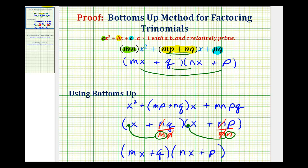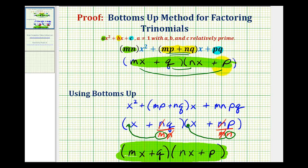And this is the bottoms-up method for factoring a trinomial when a is not equal to one — changing it to a trinomial when a is equal to one, dividing the constant terms of the binomial factors by the original value of a, simplifying, and moving the denominators up to the coefficient of x. Notice that the binomial factors here, here, and here are the same, proving that the bottoms-up method does work. I hope you found this helpful.